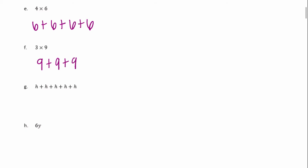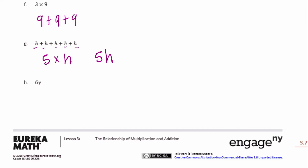For h plus h plus h plus h plus h — counting one, two, three, four, five — we have five times h, which we write as 5h, because when you have a variable multiplied by a number you just write them next to each other. Then six y: we have six groups of y, so y plus y plus y plus y plus y plus y.